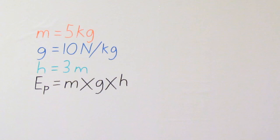For gravitational potential energy, instead of multiplying two numbers together, you'll just multiply three. Mass, the gravitational field strength, and height.